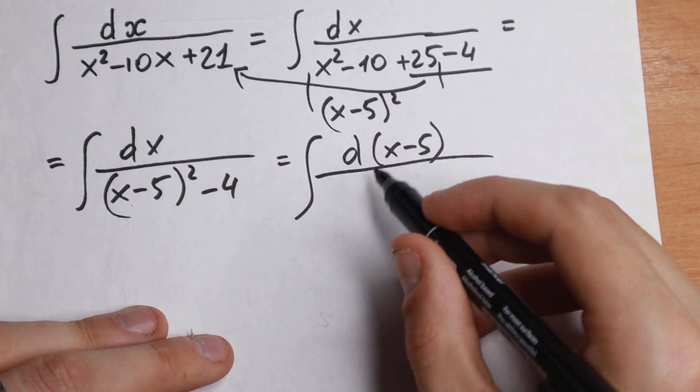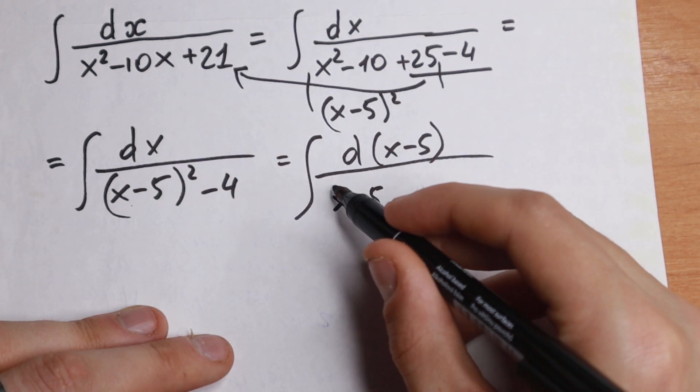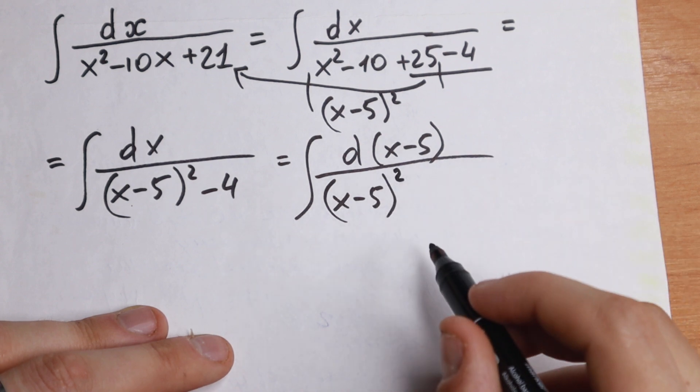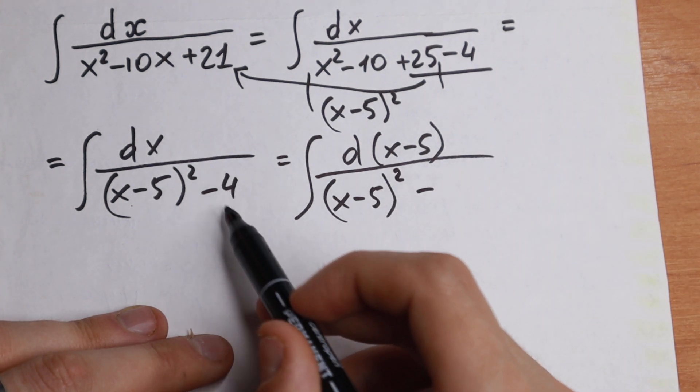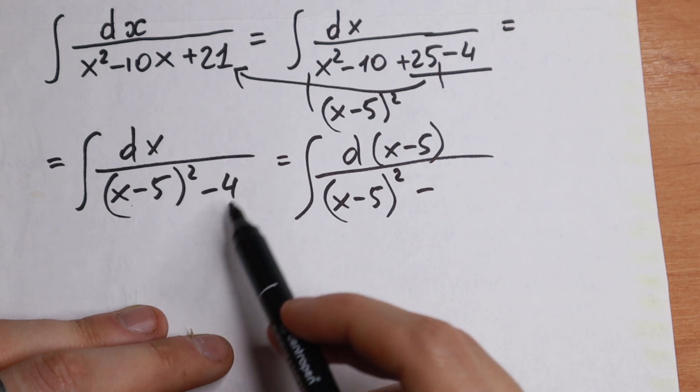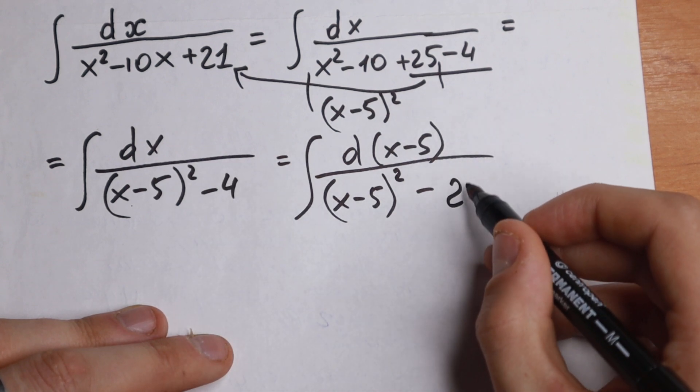So nothing change. And in denominator, we will have x minus 5 square, the same. And minus, we need to create a square from this, with this constant. So we can write this 4 as 2 square.